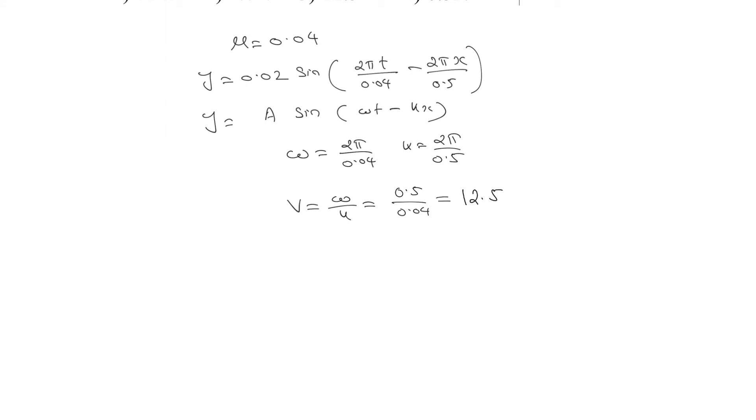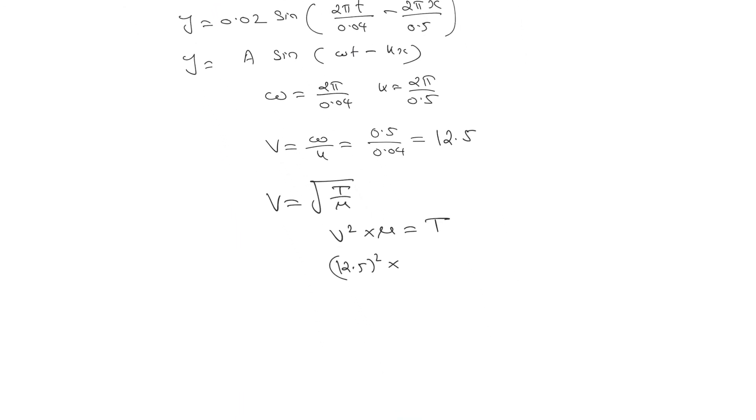As we know the velocity, we can use the formula for wave velocity on a string: v = √(T/μ). Rearranging, v² × μ = T. So 12.5² × 0.04 gives us the tension which equals 6.25 newton.